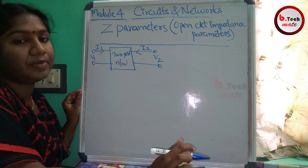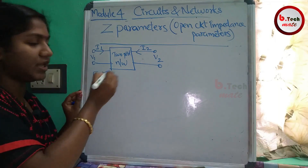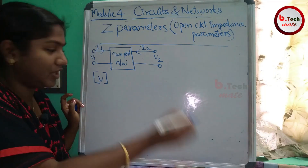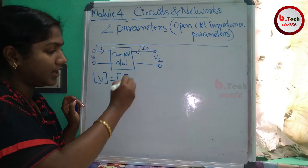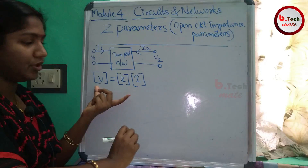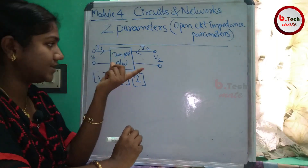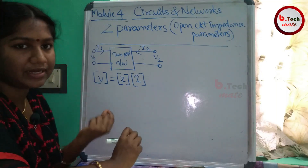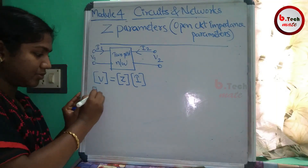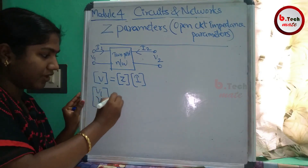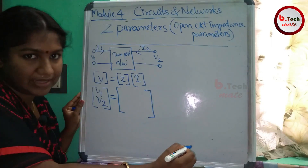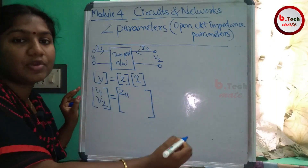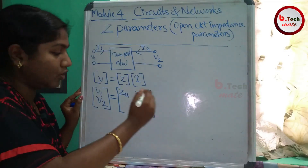For Open Circuit Parameters or Z-parameters, we represent an equation. In DC and AC circuits, voltage V equals impedance Z multiplied by current I — that is, V equals ZI. For a two-port network with voltages V1 and V2 and currents I1 and I2, we use a matrix form. The Z is the impedance matrix, which is a symmetric matrix with equal number of rows and columns.